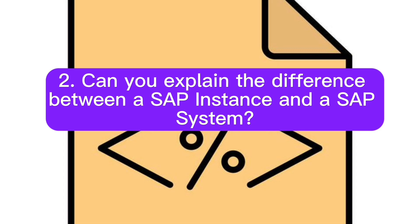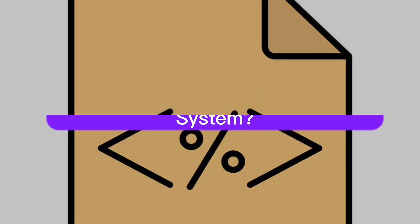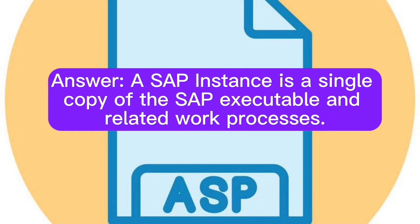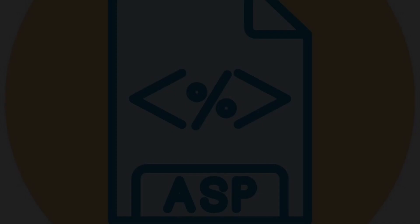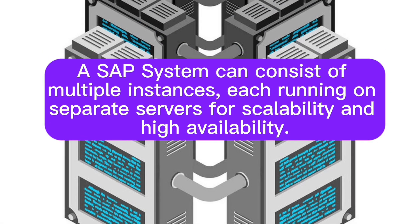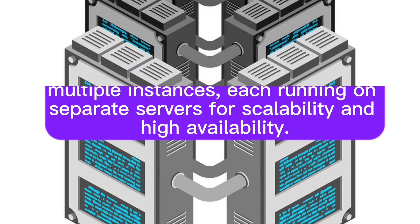Question 2: Can you explain the difference between a SAP instance and a SAP system? A SAP instance is a single copy of the SAP executable and related work processes. A SAP system can consist of multiple instances, each running on separate servers for scalability and high availability.